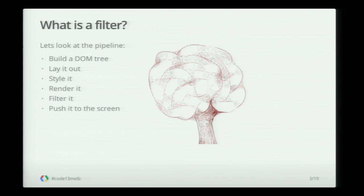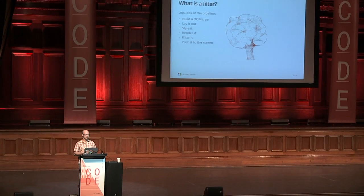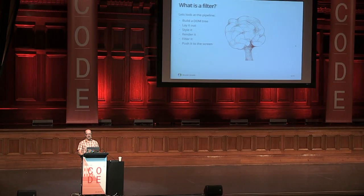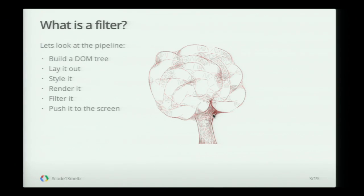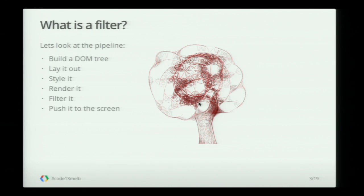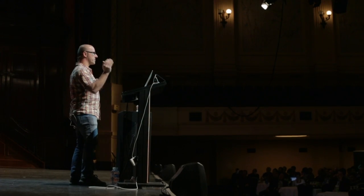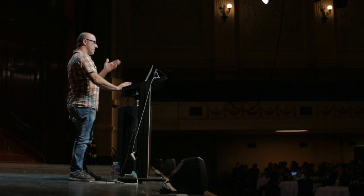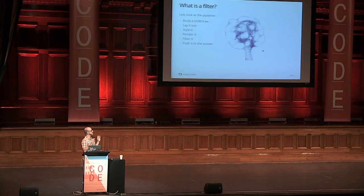Basically, this is how a page gets built. You start with a tree, you lay it out, you style it, you do your CSS, you render it, and you can embellish it a bit more, do a bit more styling. And then there's a final stage that you can apply, and this is a CSS filter. The filter is the second last stage — just before you pop the pixel to the screen, you apply a filter. So here I've got this tree that I've built, and if I apply a filter, I'm going to blur it and shift its color a little bit.